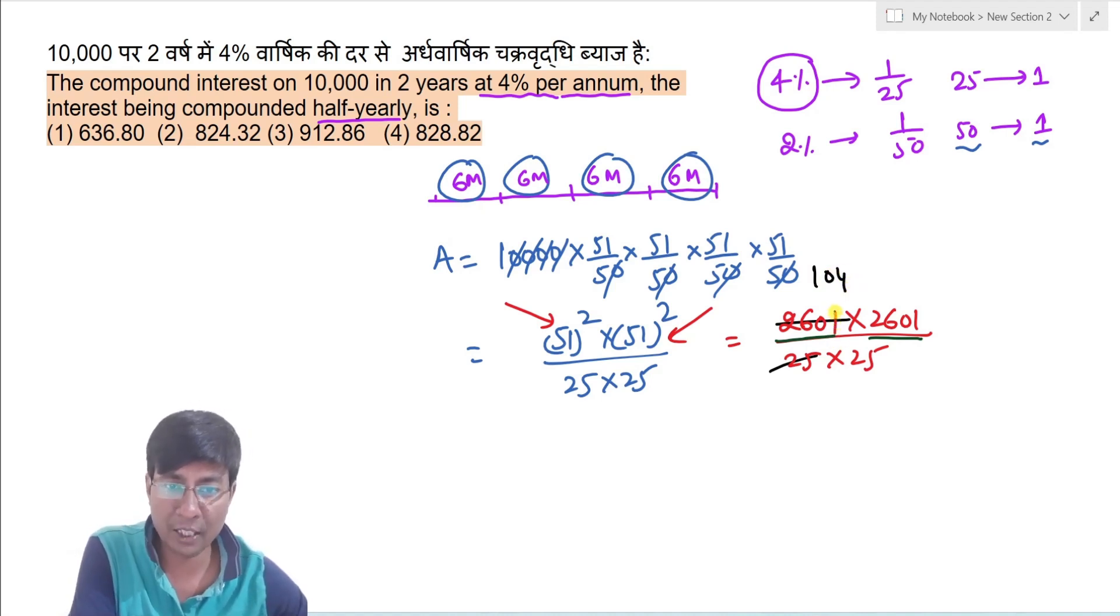Uske baad bacha kitna, 1. Toh 1 ko 25 se divide karoge, toh ye bacha jayega, 0.04. Toh second term isko bhi divide karoge, toh kya milega, 104.04.